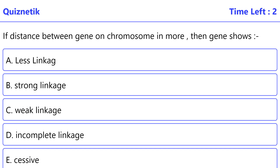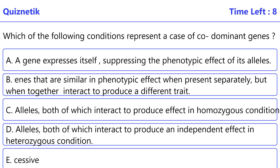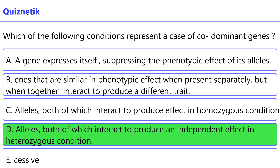If the distance between genes on a chromosome is more, then the gene shows the correct option is B: no strong linkage. Which of the following conditions represents a case of co-dominant genes? The correct option is D: alleles both of which interact to produce an independent effect in heterozygous condition.